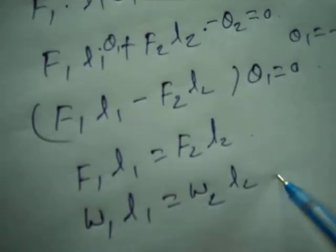Here the gravitational force is equal to weight. So W1 L1 equal to W2 L2. The equilibrium condition for this is W1 over W2 equal to L2 over L1.